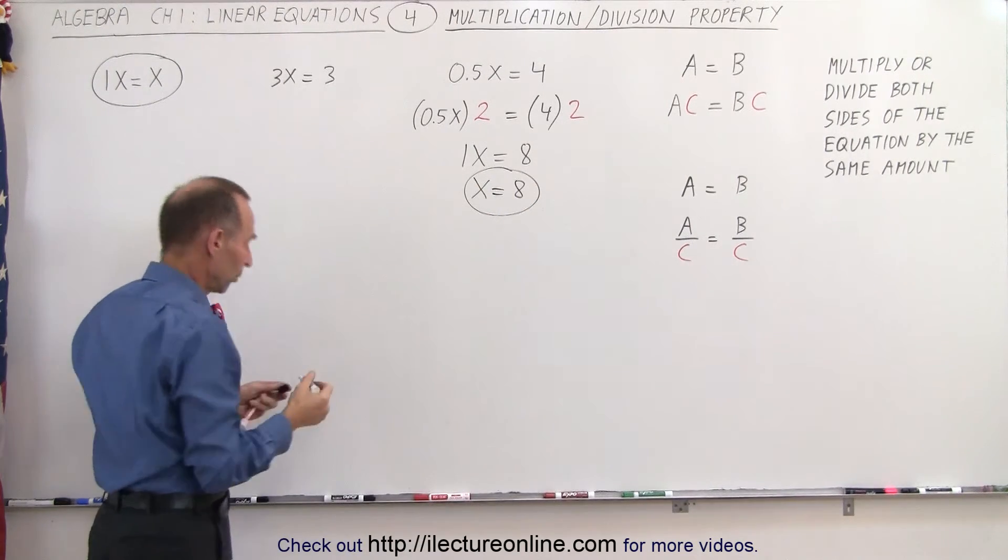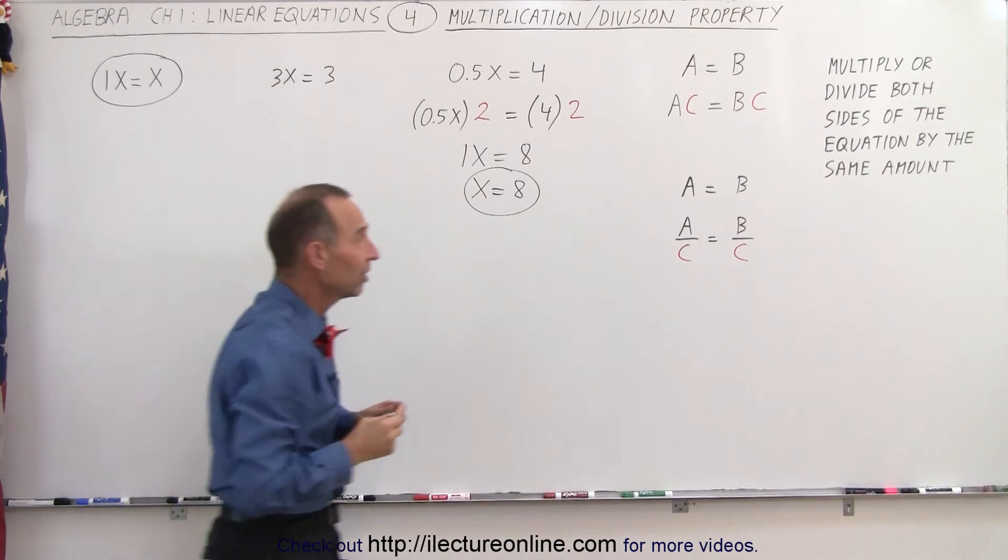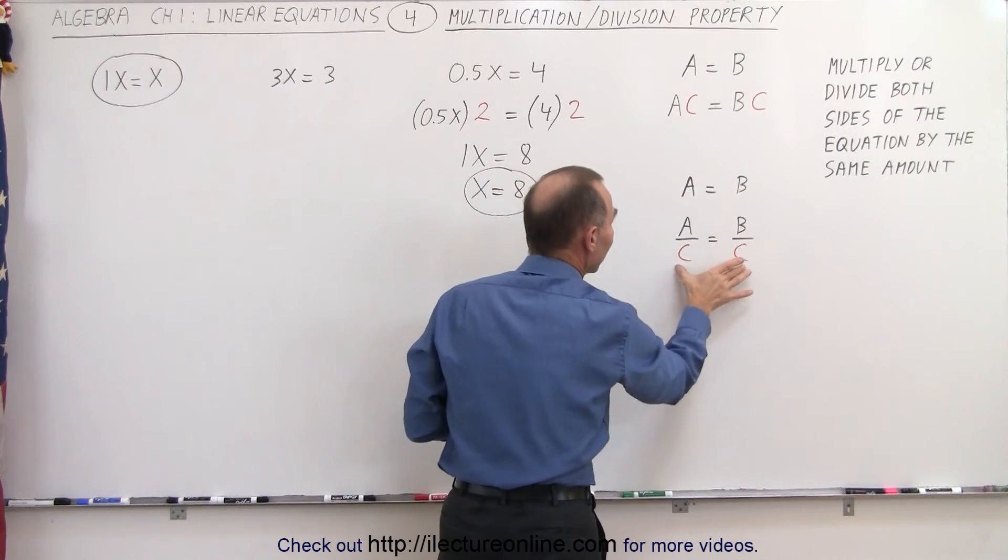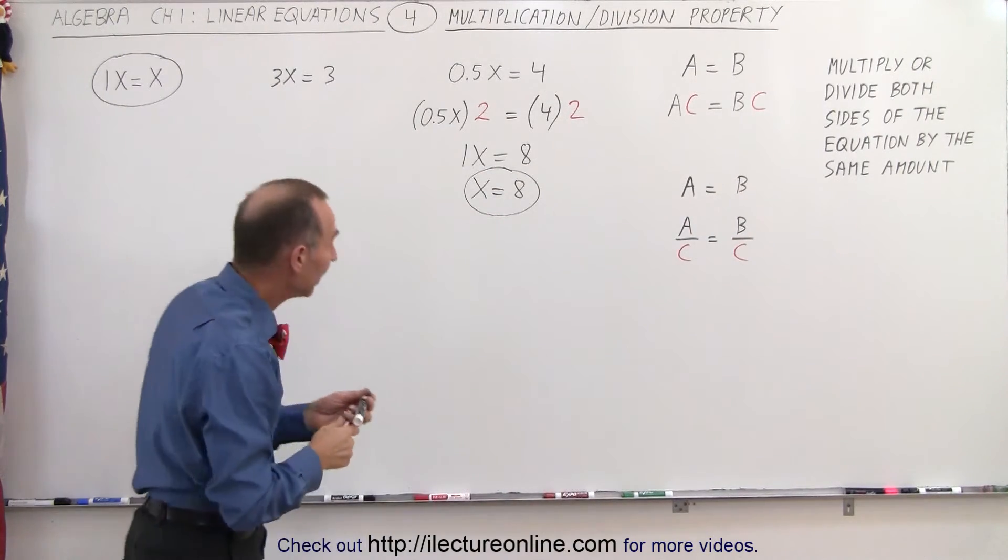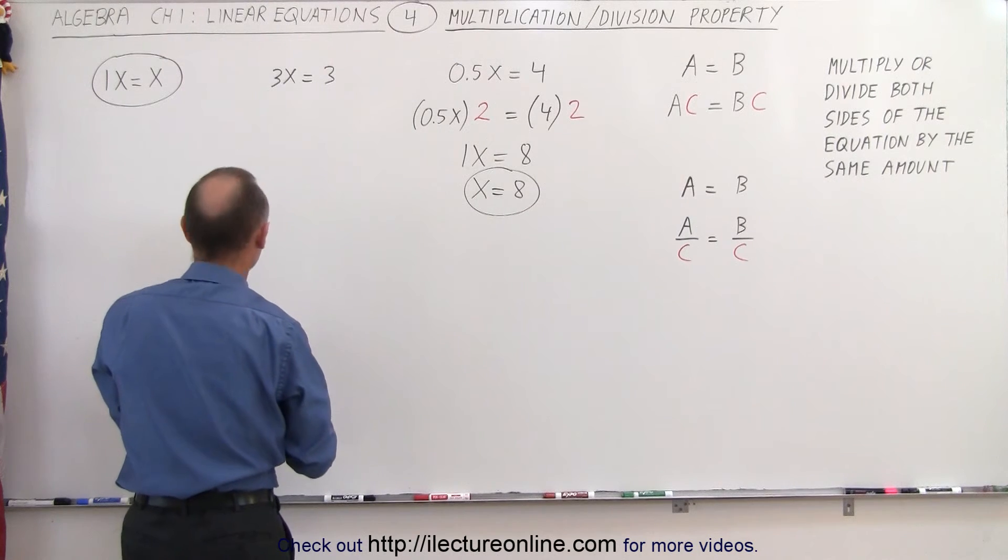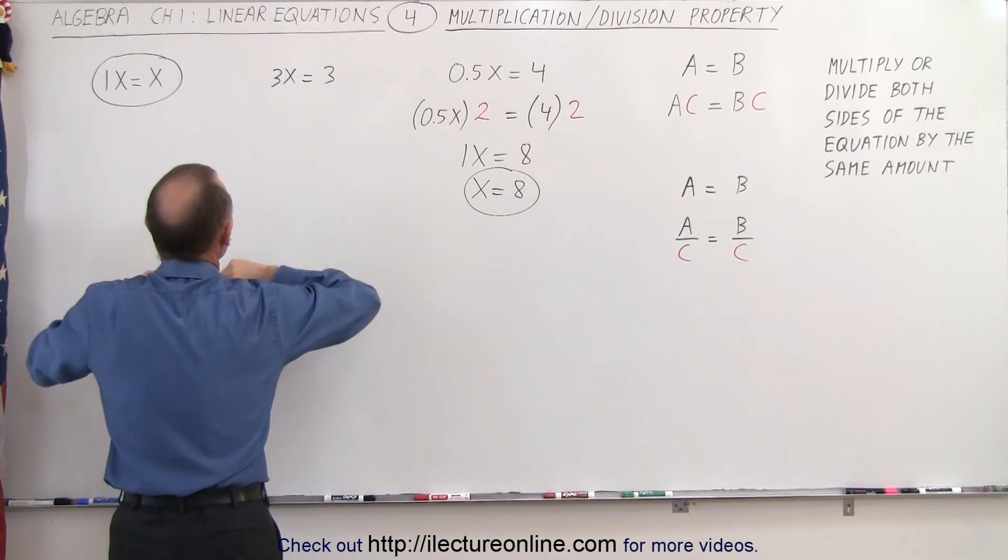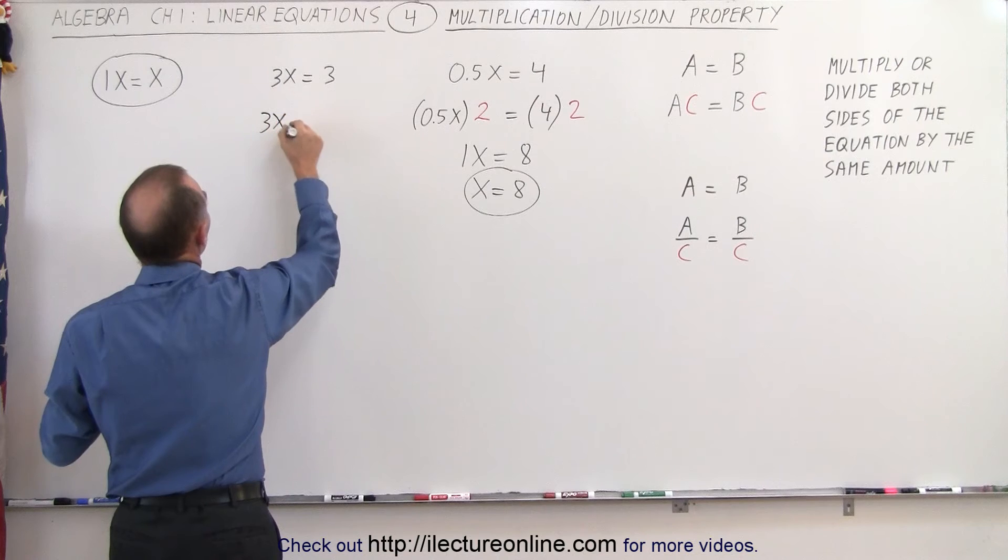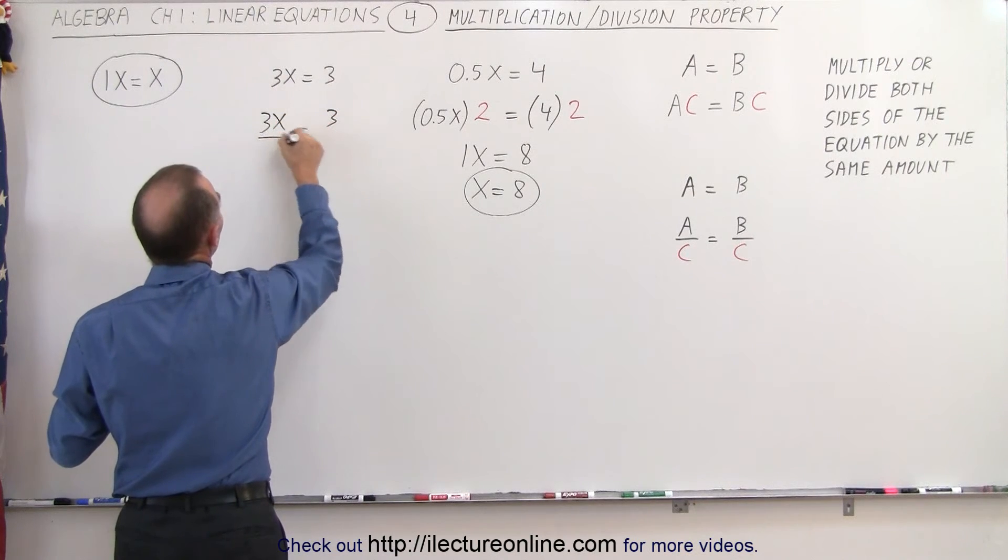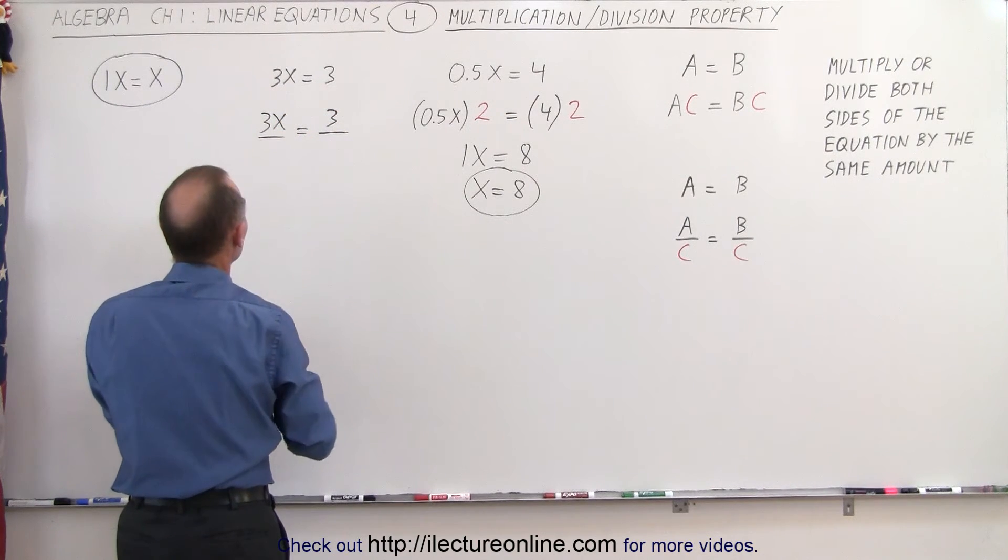Here we have 3X equals 3. What we're going to do there is the same thing as what we did over here. We're going to divide both sides by the same number. In this case, we're going to divide the left side and the right side by the number 3. So we have 3X is equal to 3, and when we divide both of them by the same number 3...